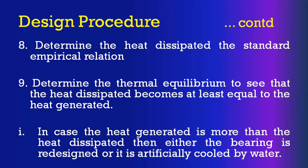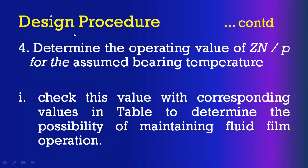Step 4 is to determine the operating value of bearing characteristic number ZN/P from the data book for the given application, then check this against the bearing modulus. If the bearing modulus is less than the operating value of ZN/P, you can maintain a thick film of lubrication and confirm that the bearing operates under hydrodynamic conditions.